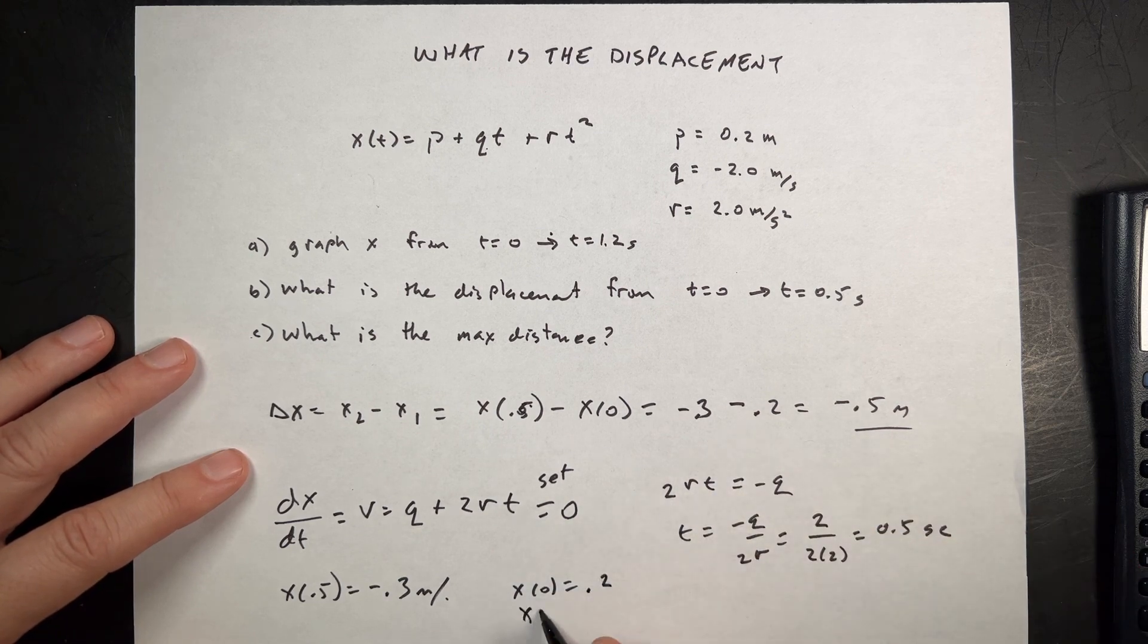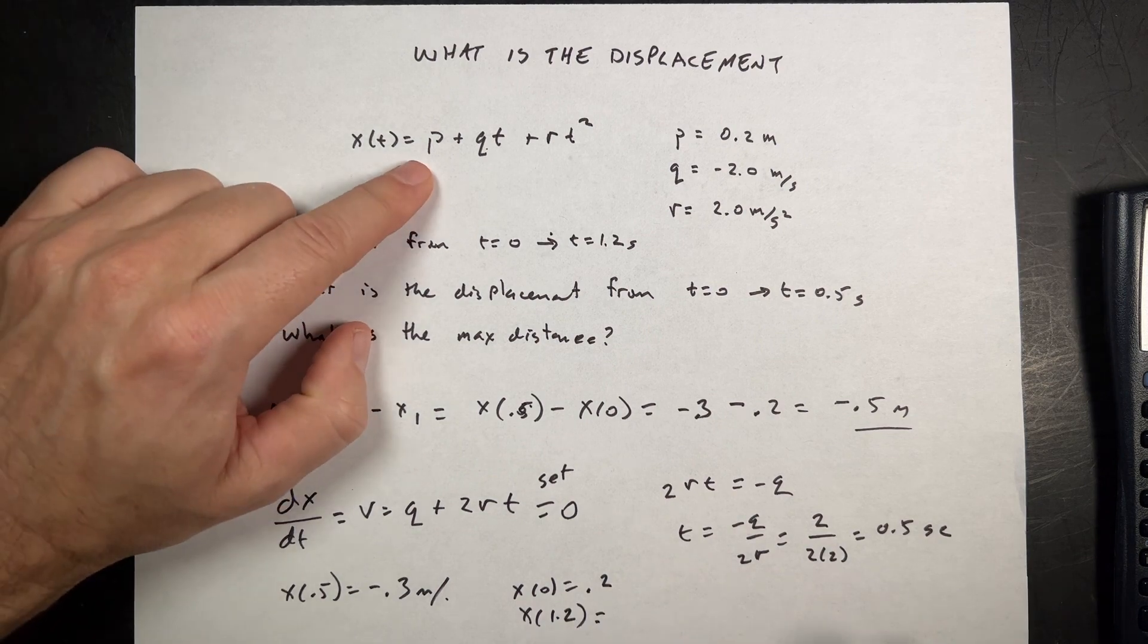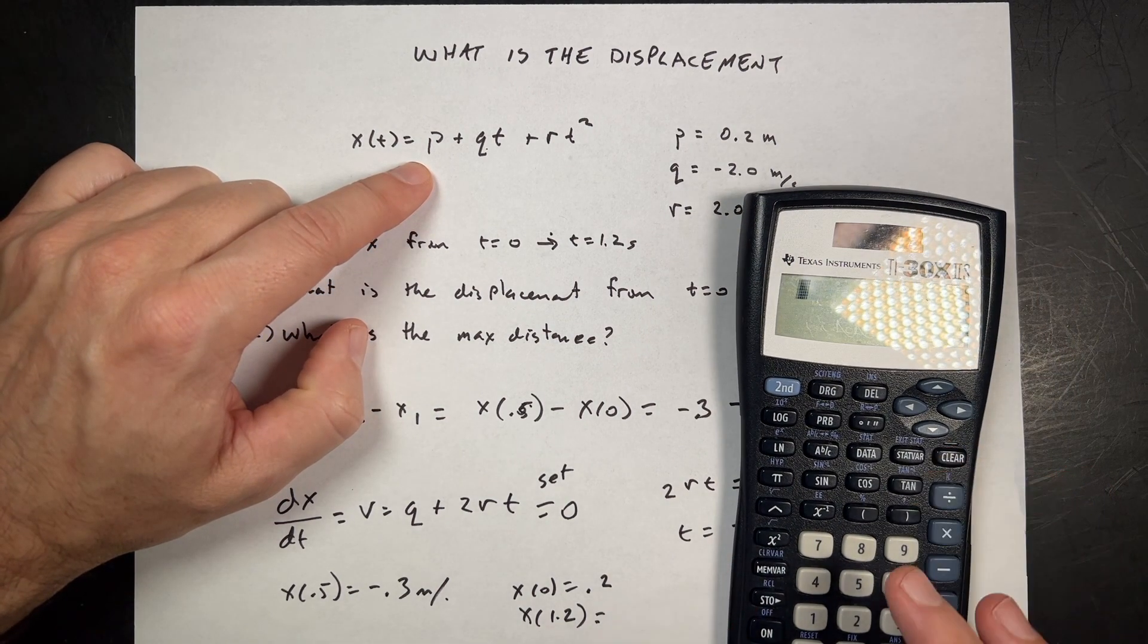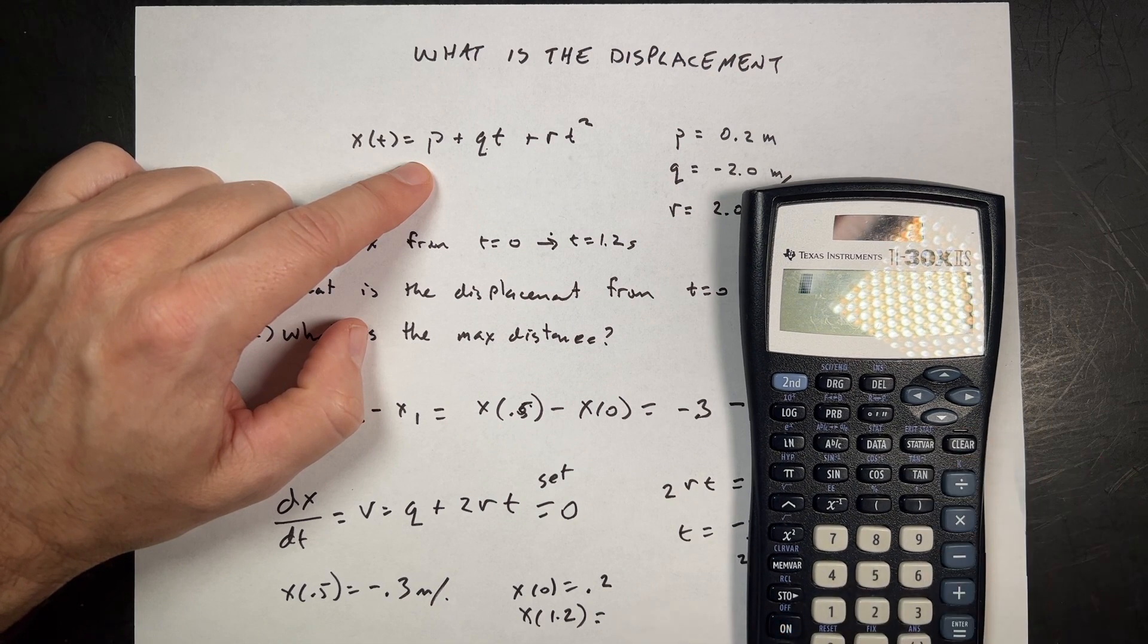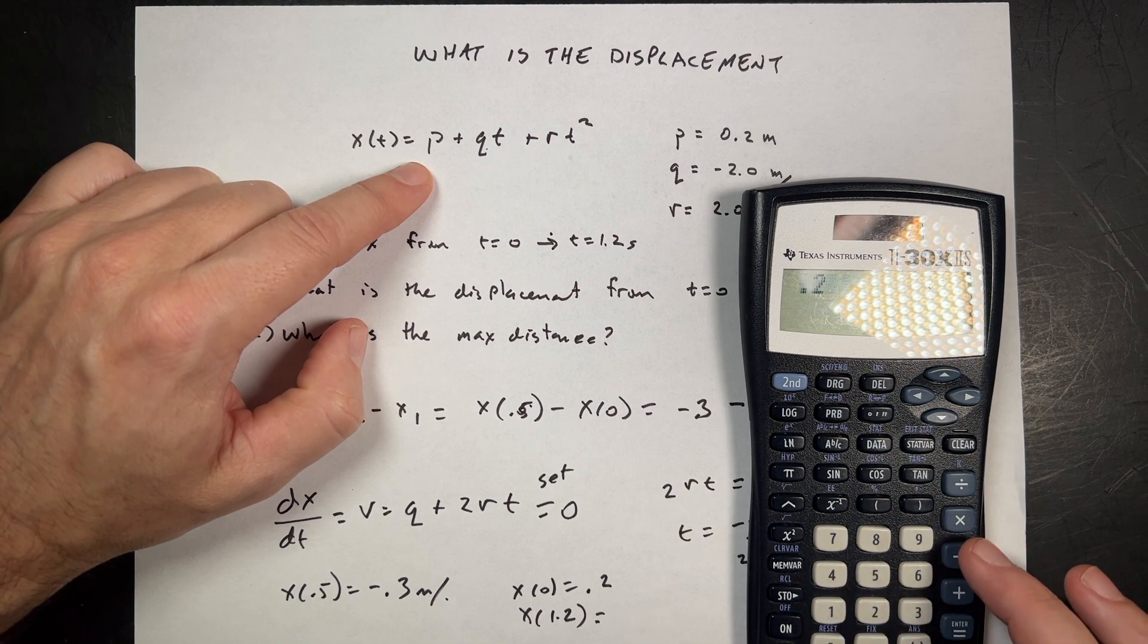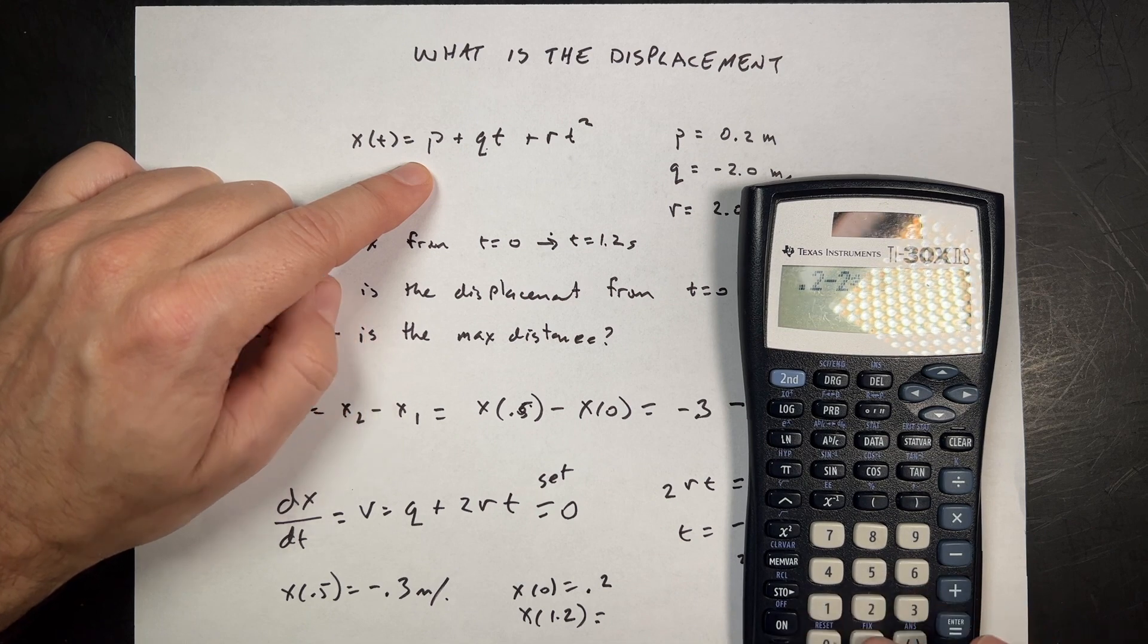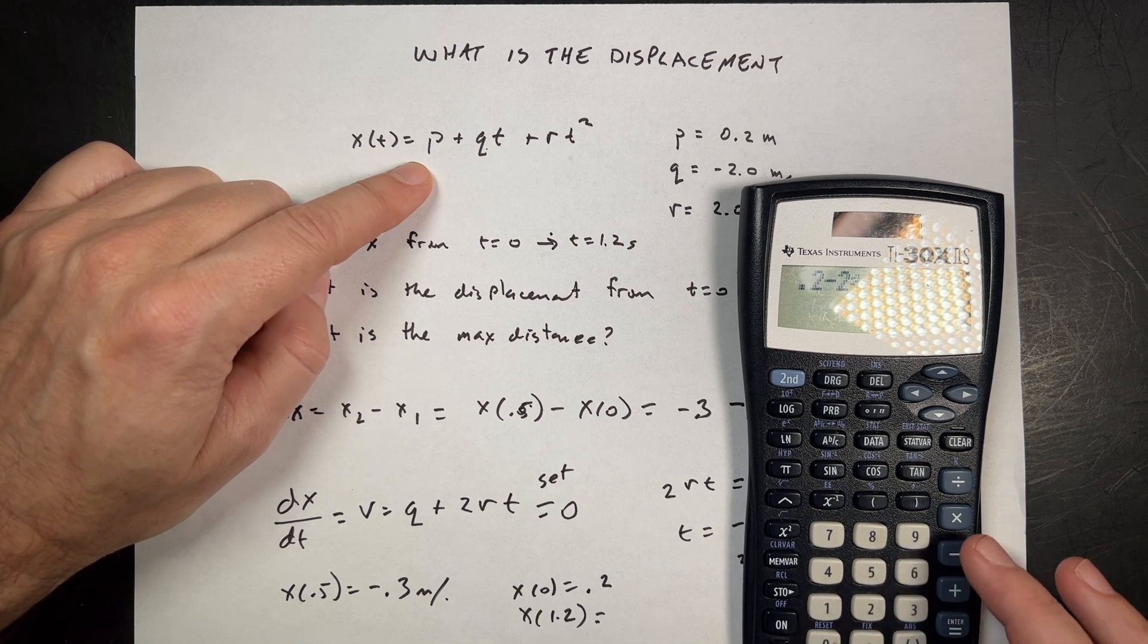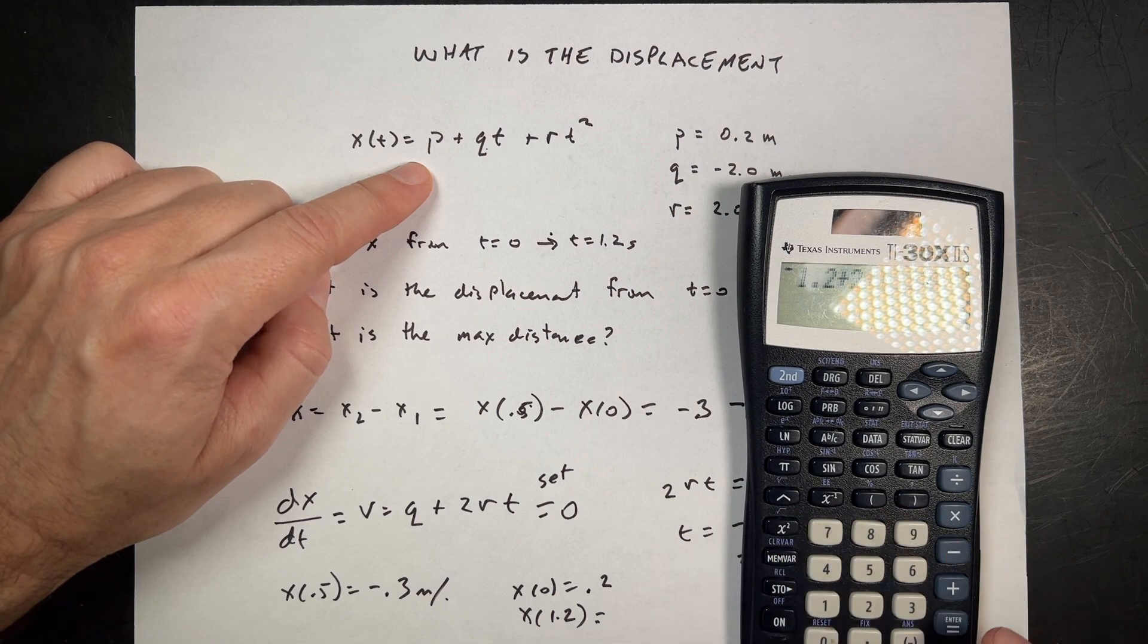And X at 1.2. So X at 1.2, I'm going to put that in up here. So I'm going to say 0.2 minus 2 times 1.2 plus 2 times 1.2 squared.